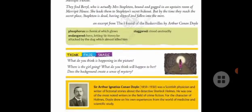Before starting the chapter, let's learn about the author. Sir Arthur Ignatius Conan Doyle was a Scottish physician and writer of fictional stories about the detective Sherlock Holmes. He was one of the most noted writers in the field of crime fiction. For the character of Holmes, Doyle drew on his own experiences from the world of medicine and scientific study.